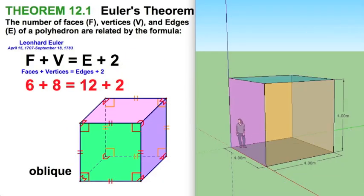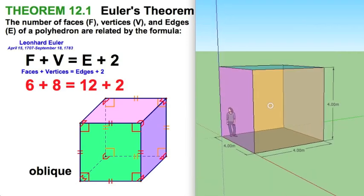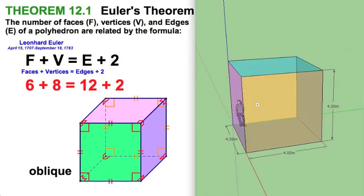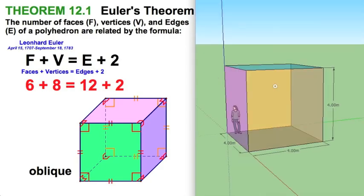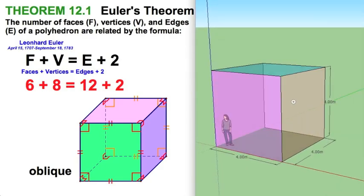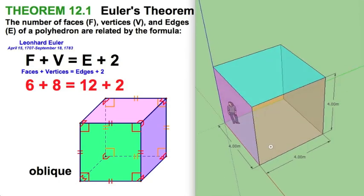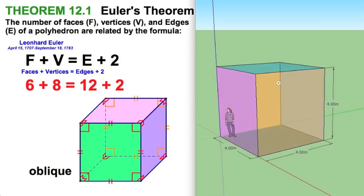Let's start this chapter with Euler's Theorem. We have a cube represented two ways: on the left is an oblique drawing and on the right we can see perspective. In this perspective drawing we have a four by four by four cube, which clearly has six faces. The vertices — count them — four on the bottom, four on top, that's eight, and the edges: four on the bottom, four on the top, and four vertical — that's 12.